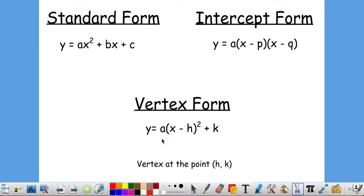So our general form is y equals a times x minus h squared plus k. And the reason this is called vertex form is because the vertex is at the point h, k. So you don't have to do any kind of formula or find a middle value to find the vertex. You're basically just given the vertex.